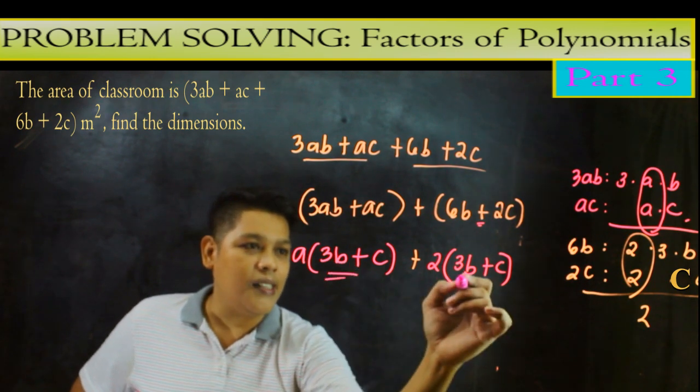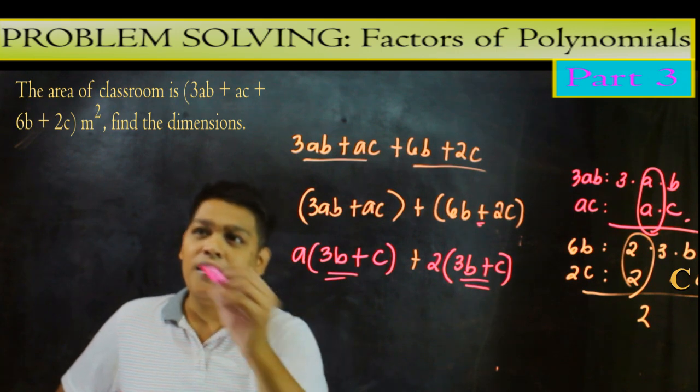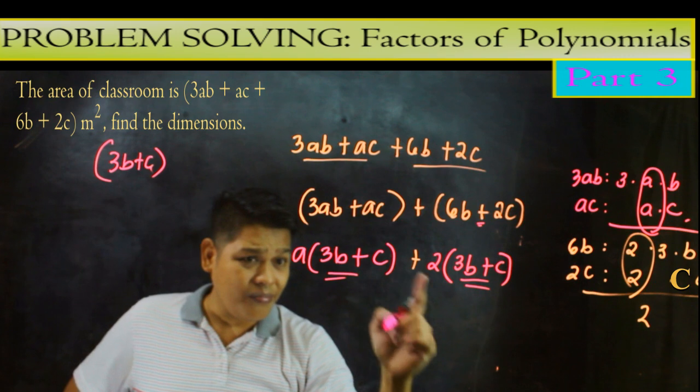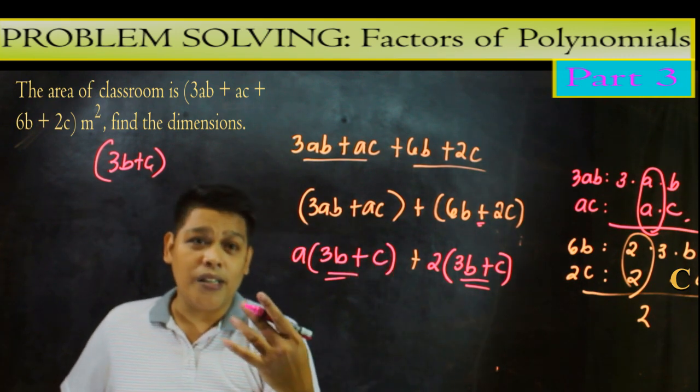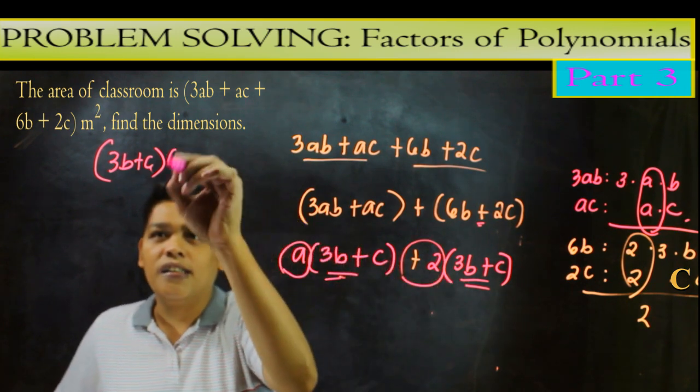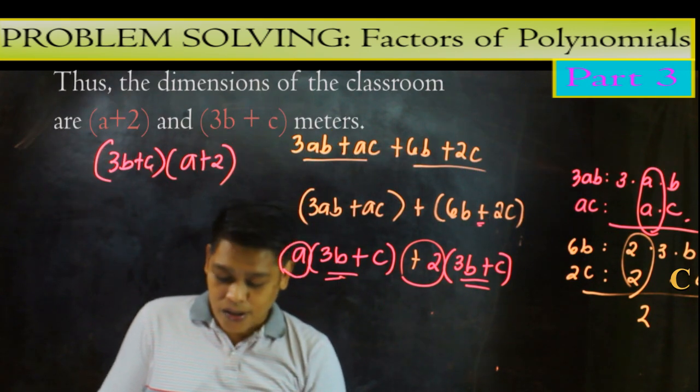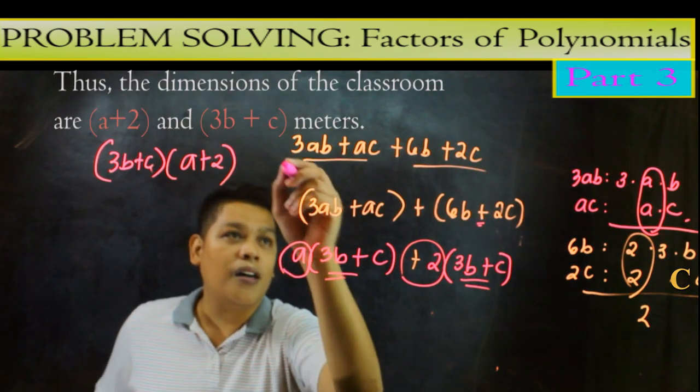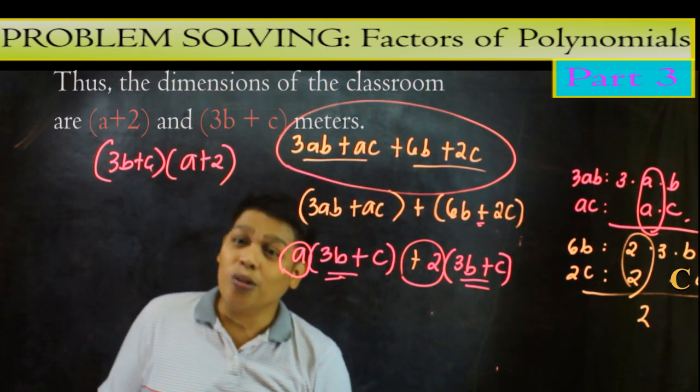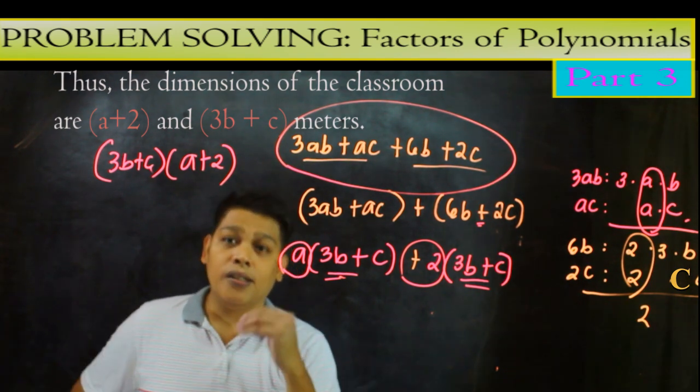So 3b plus c 3b plus c. So isusulat na lang natin yan as isa. So 3b plus c ngayon dahil isa na lang yan pero magpuprocentize sa multiplication ang natira na lang is a plus 2. So lalagyan natin dito a plus 2. So ibig sabihin ang factor ng nito, factor yung may grouping itong ating polynomial is 3b plus c times a plus 2. So ito yung ating magiging dimension. So that's all yun. So sana may natutunan kayo.